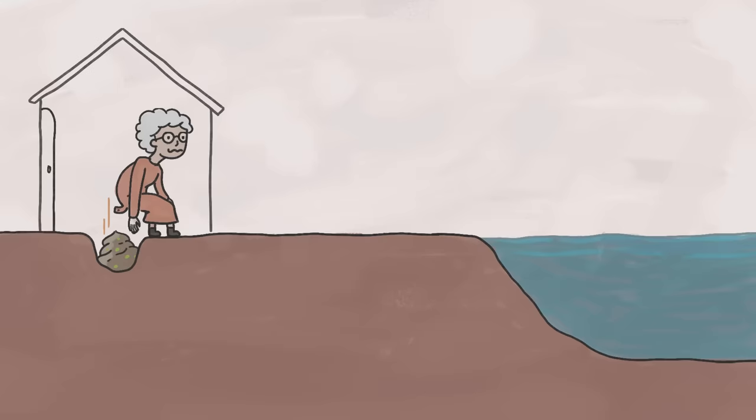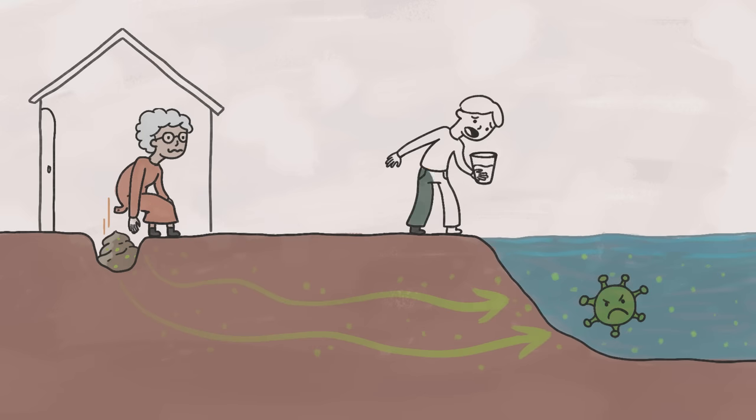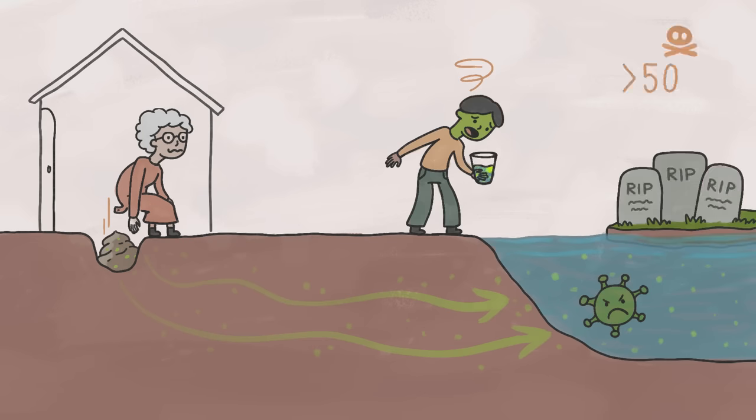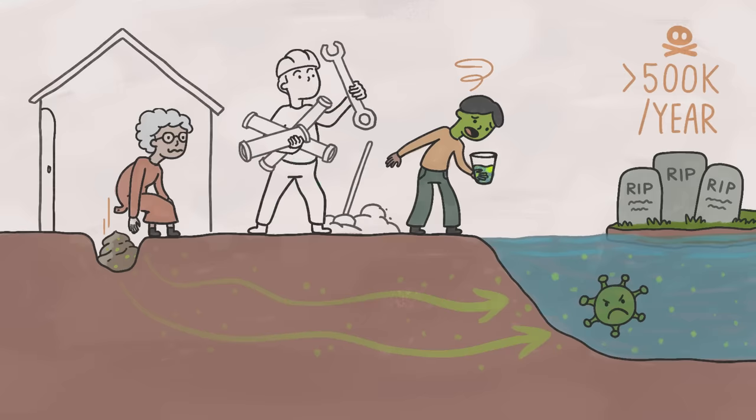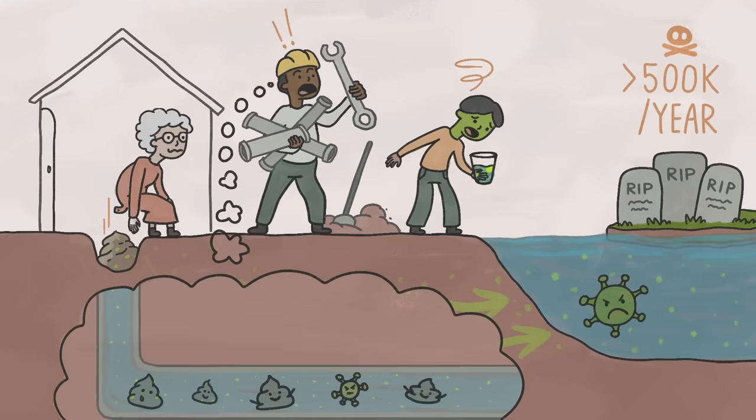In places without sewers, those fecal pathogens stick around, making lots of people sick and killing more than half a million people every year. So we should definitely build sewers in places that don't already have them, right?